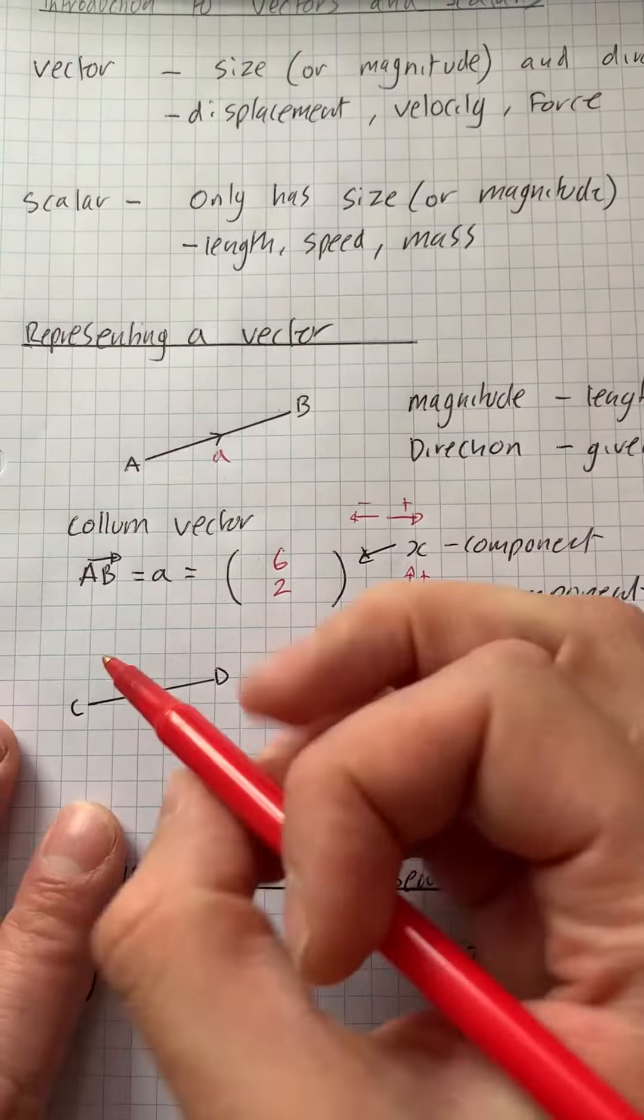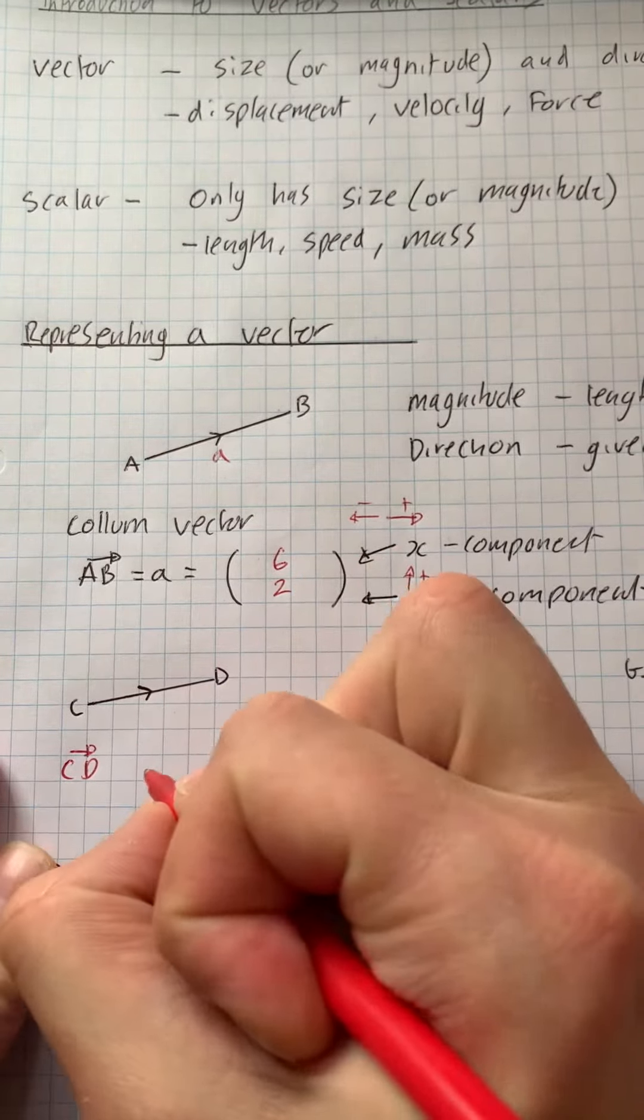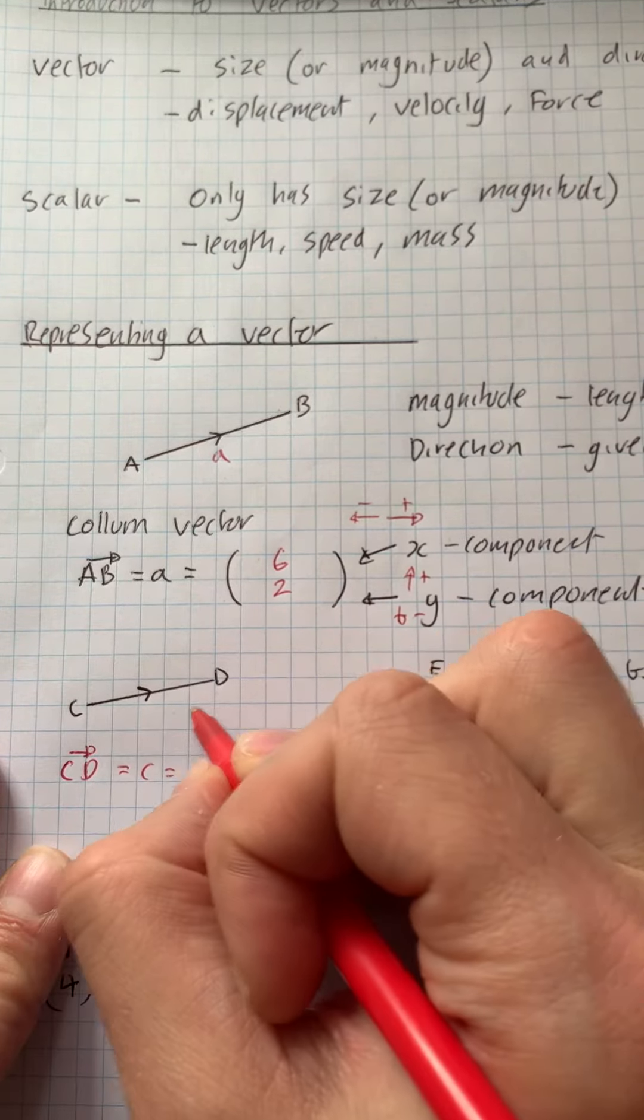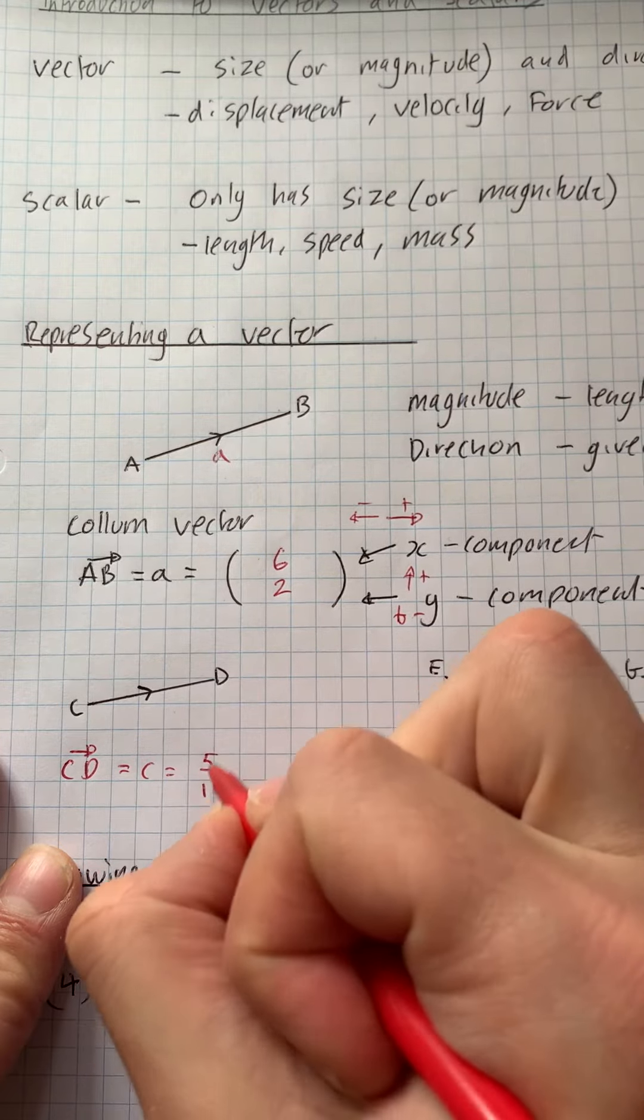If we looked at this one, it would be C to D, or we could just call it C. And that would be 1, 2, 3, 4, 5 that way. And we're going 1 up.